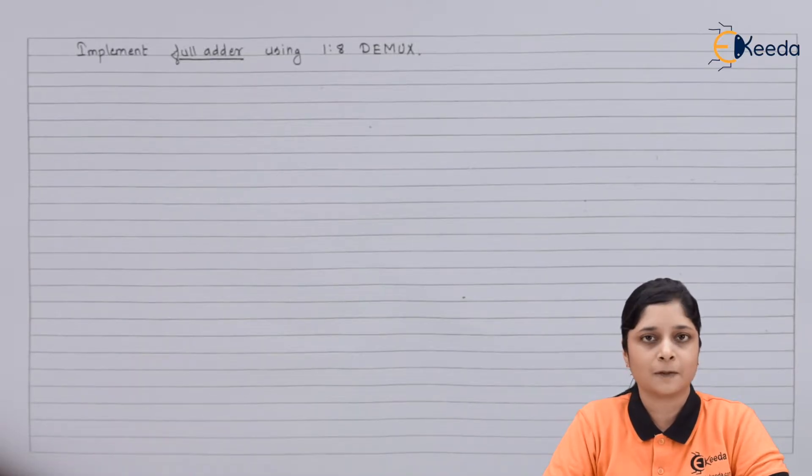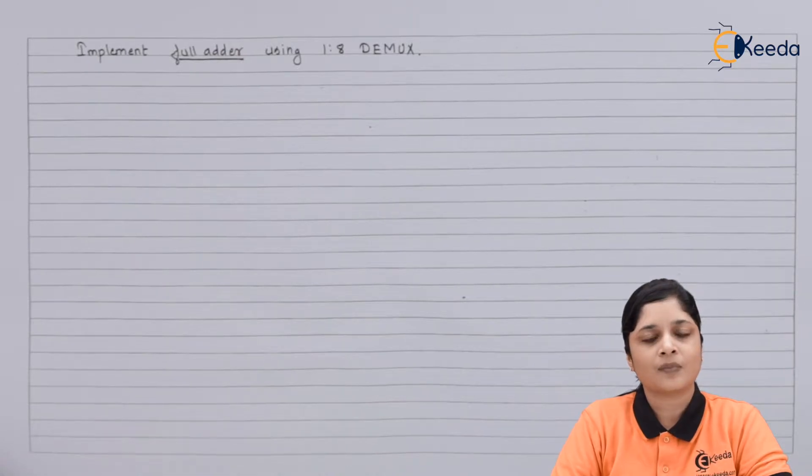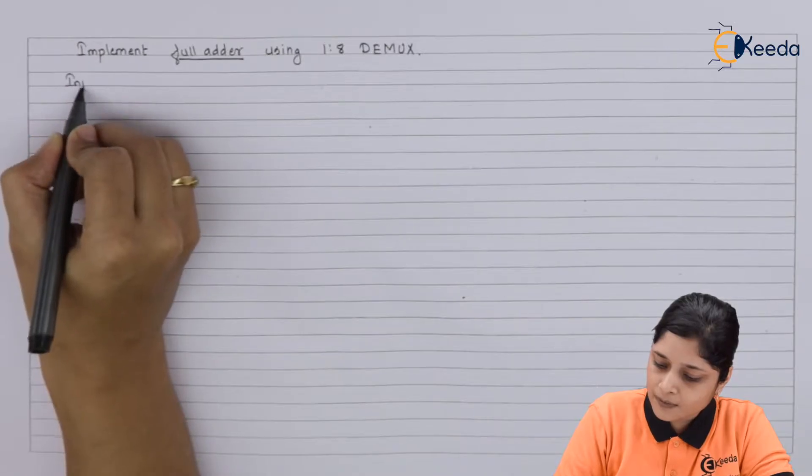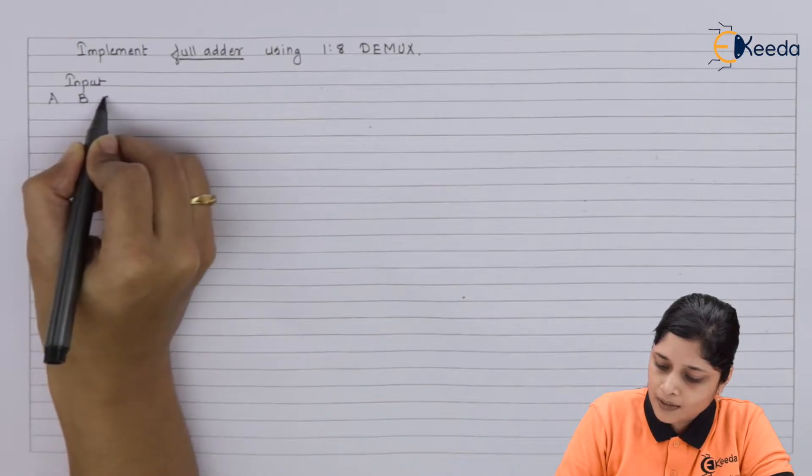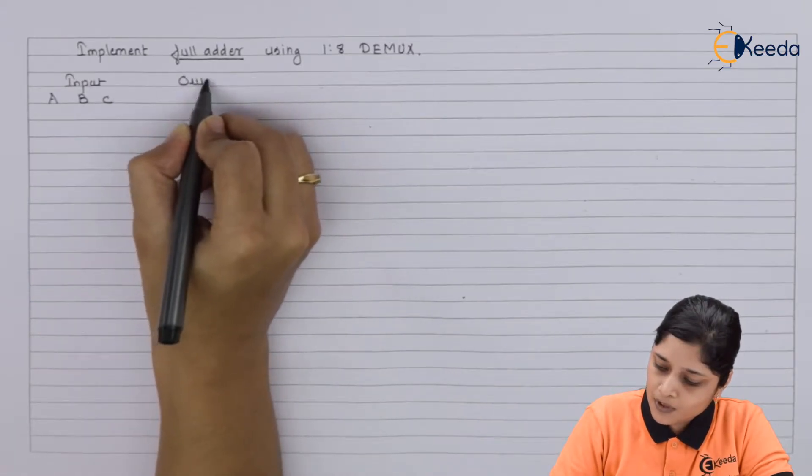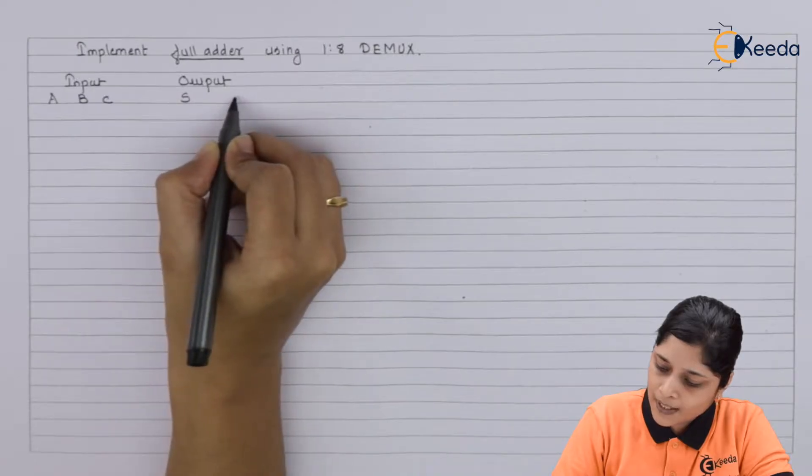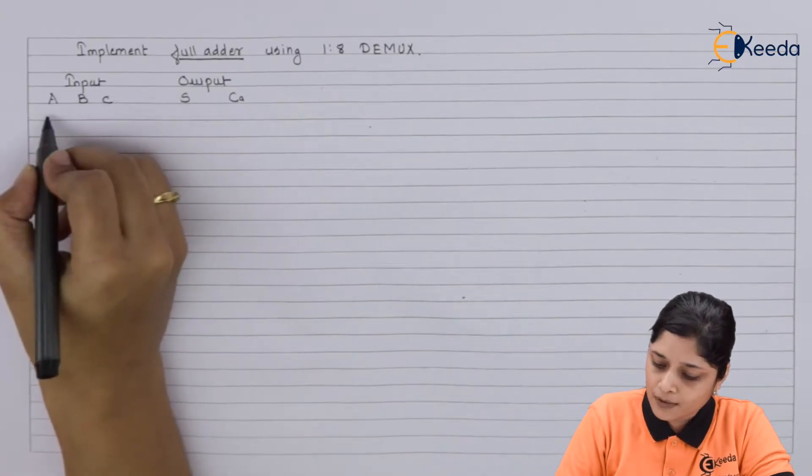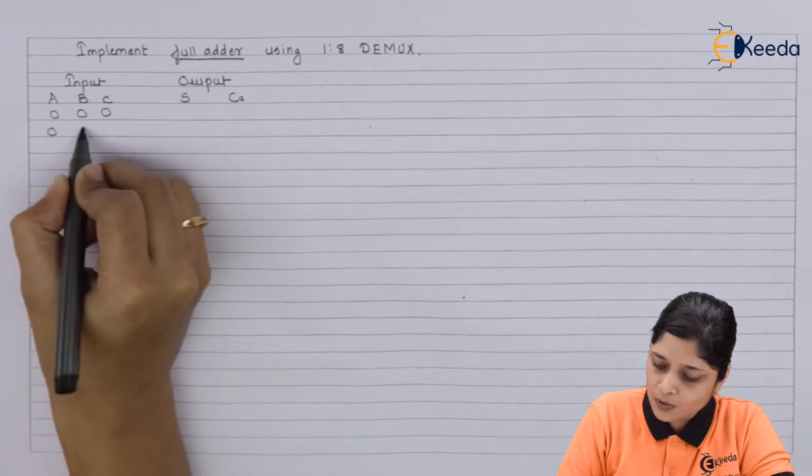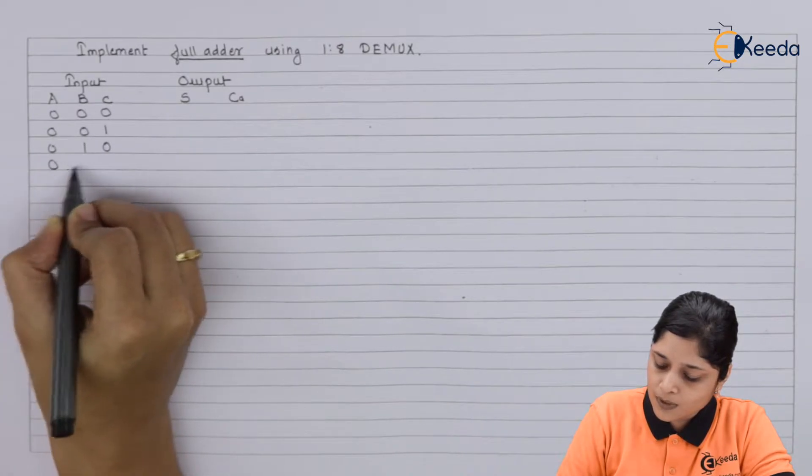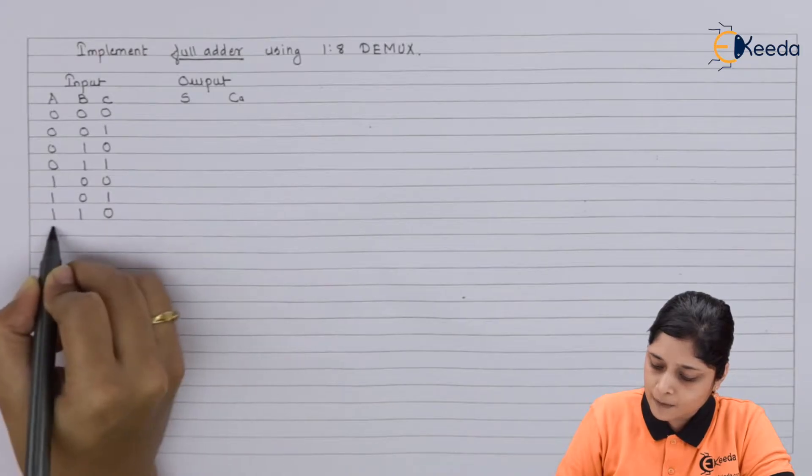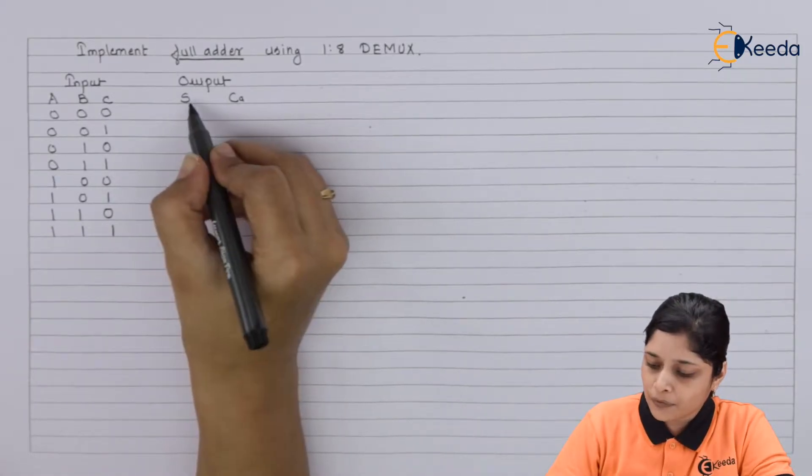Outputs are sum and carry. Now to design using demultiplexer you require truth table for the full adder. So we will draw here the truth table for the full adder. At the input side you have three inputs A, B and C, and at the output side you have two outputs sum and carry. Three inputs means zero to seven combinations you have to take. So 000, 001, 010, this is your three, then four, five, six and seven.